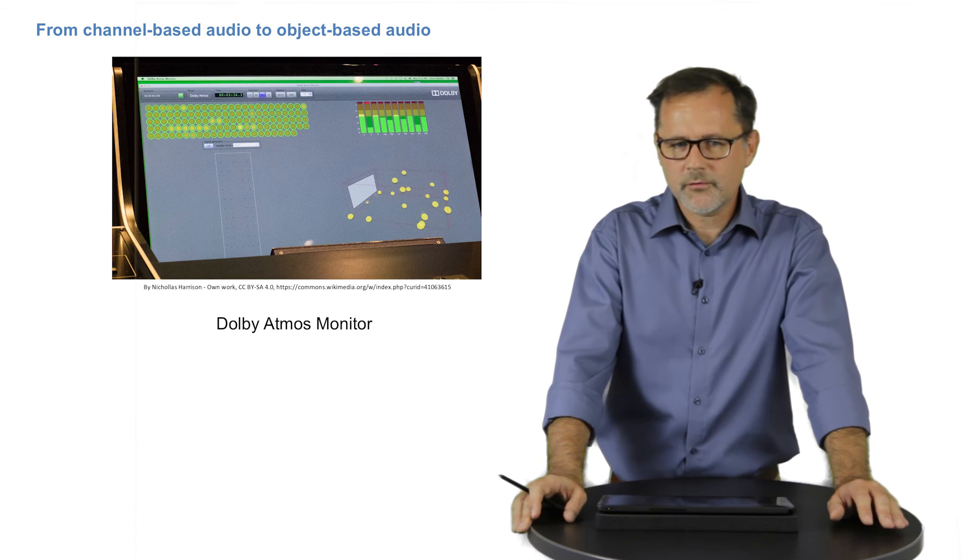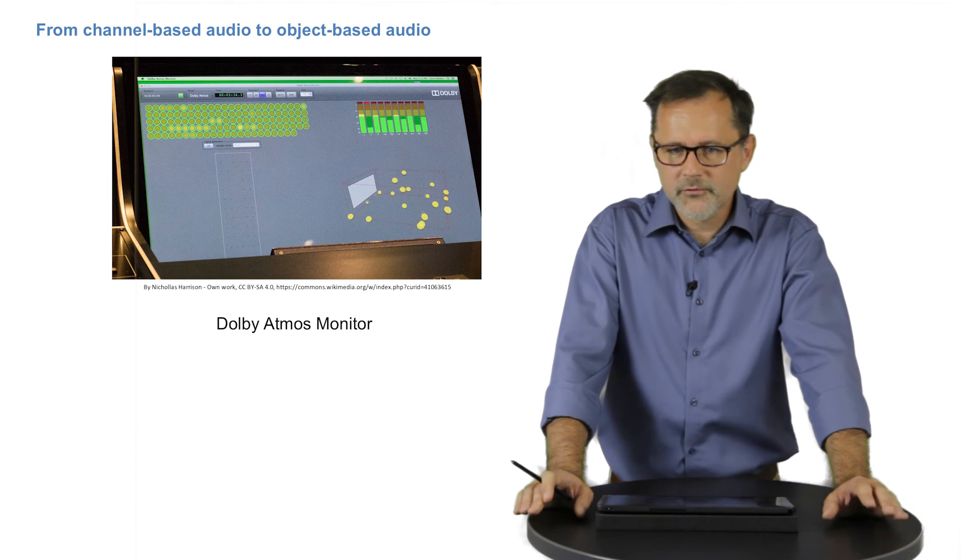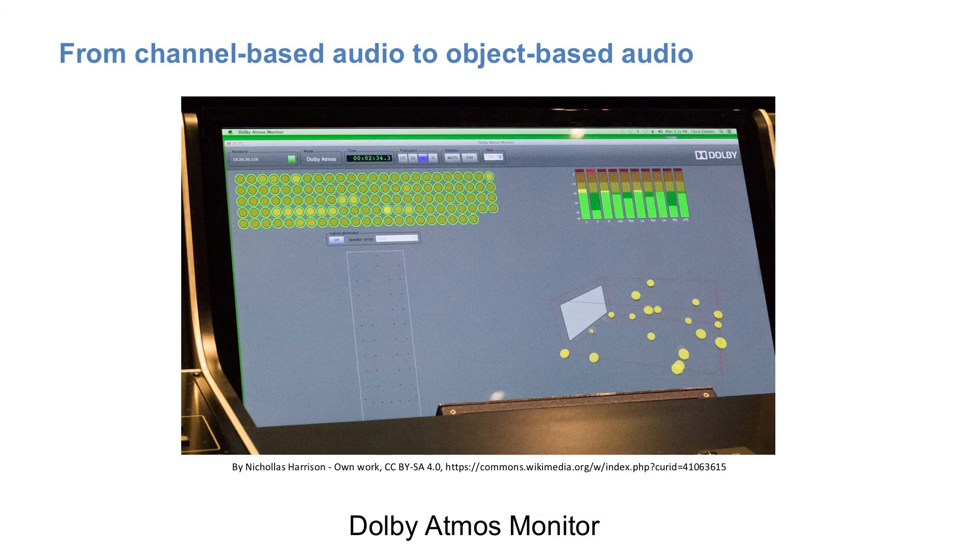Dolby Atmos, intended as a new format for film sound, follows a similar approach. Sound objects are encoded as single channels, while the position and the movement of these sound objects is handled separately, for example, making the sound of a helicopter move through the movie theater.